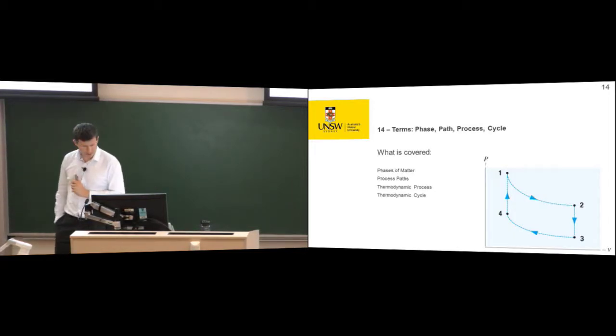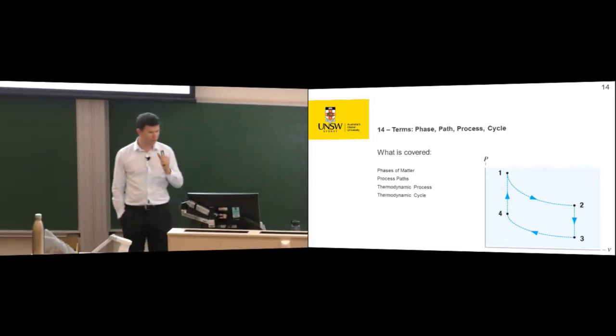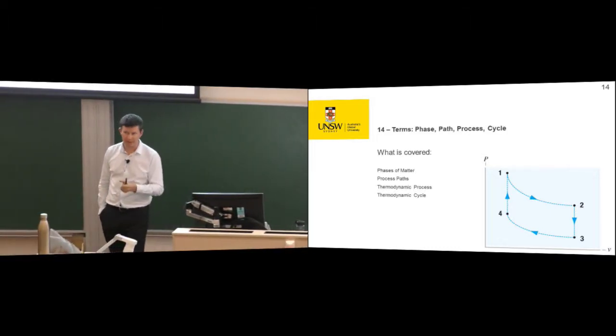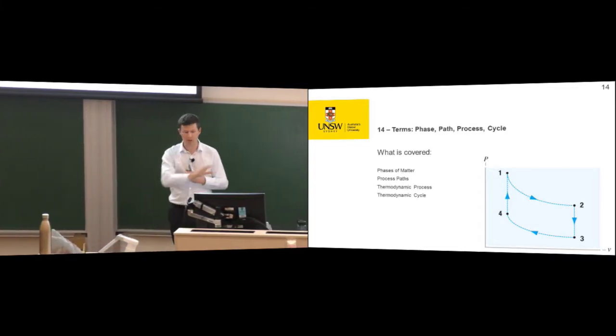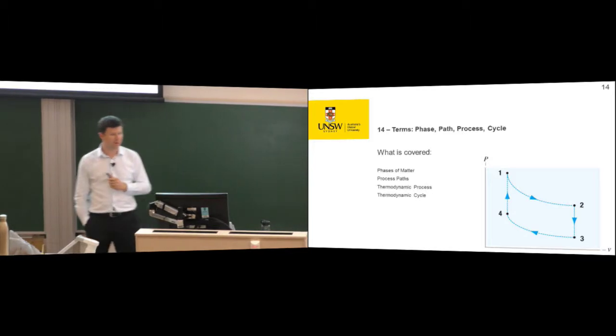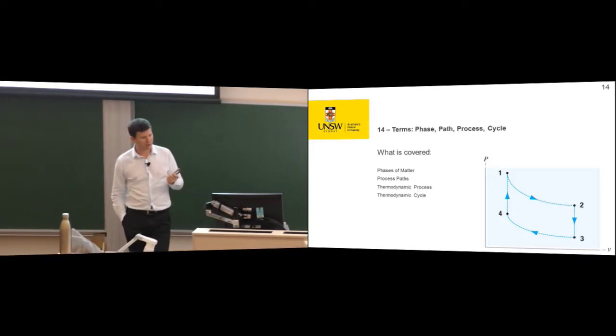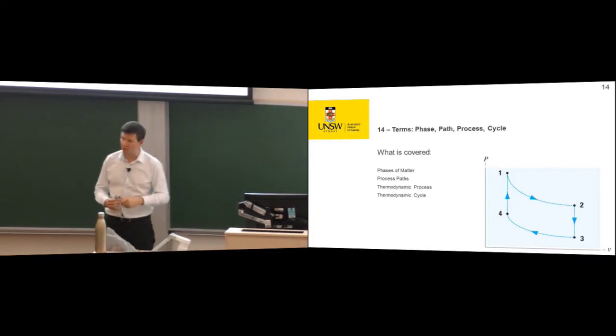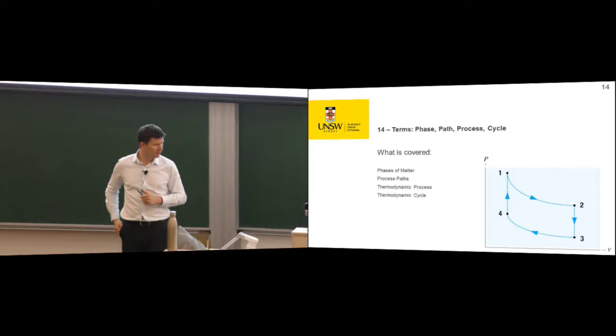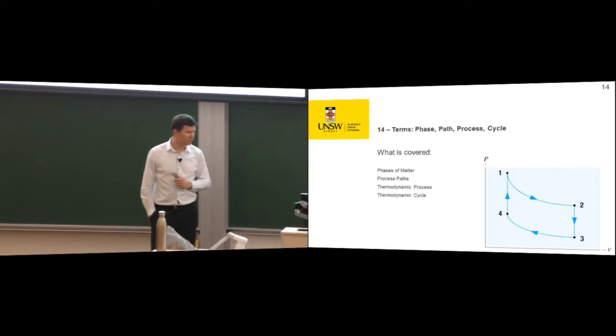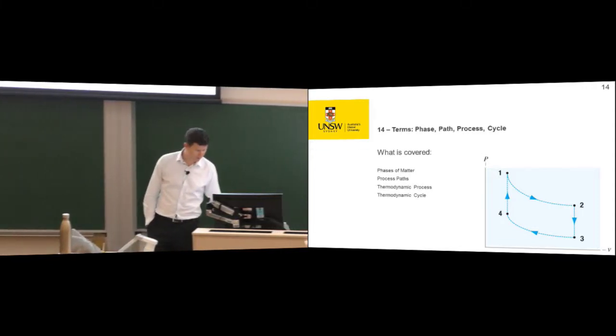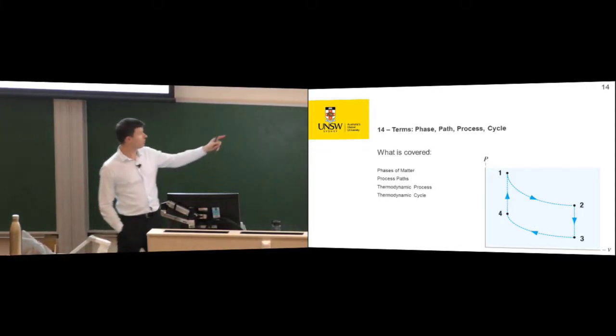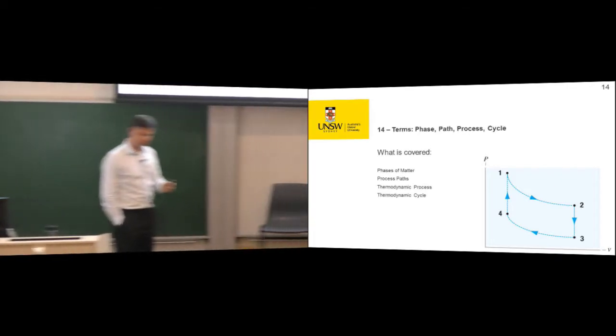Some vocabulary for us. We'll talk about phases of matter. We called it states yesterday. Because we used state to indicate that something's changing state from state one to state two, we'll use phases in this subject. Process paths. And then there's six terms that we use in thermodynamics. I want to introduce them formally because you may or may not have heard of them. Some might be obvious. Others will not. And then the idea of a thermodynamic cycle, which this is a thermodynamic cycle represented over here on the bottom right.